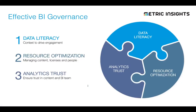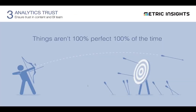Now let's look at the last piece of the puzzle. We've established data literacy and optimized resources. The last key piece is generating trust — in both the BI team and in the content. It's important to start with the premise that no one's going to be 100% perfect 100% of the time. No matter how good your data pipelining process is, you're going to have days where something happens downstream — the data feed is wrong, the Tableau data extract fails, something goes wrong. Trust isn't about being perfect — it's really about what you do when you're not perfect.